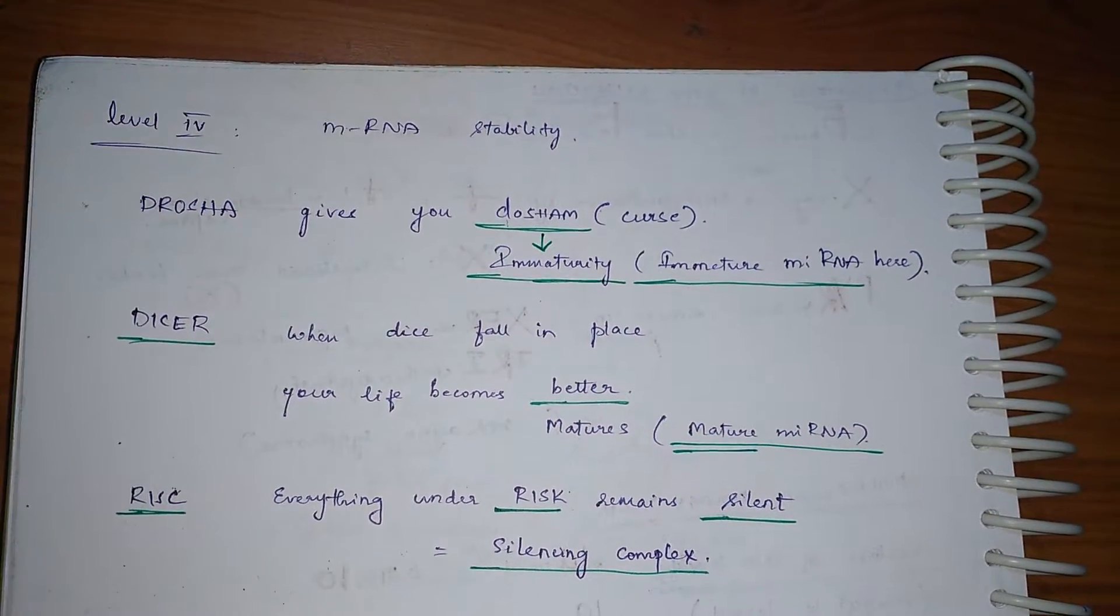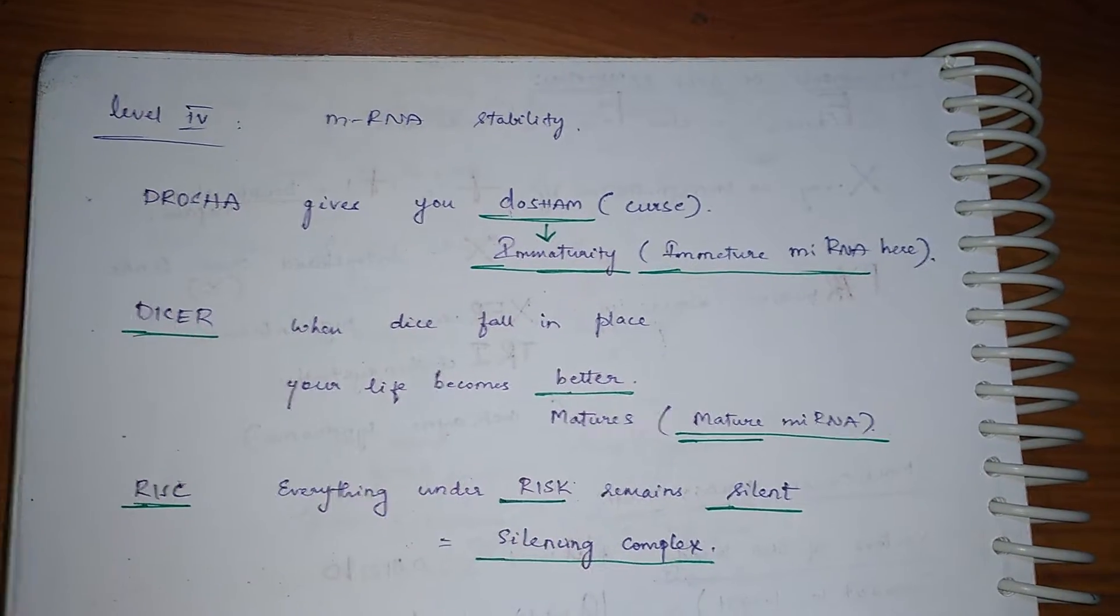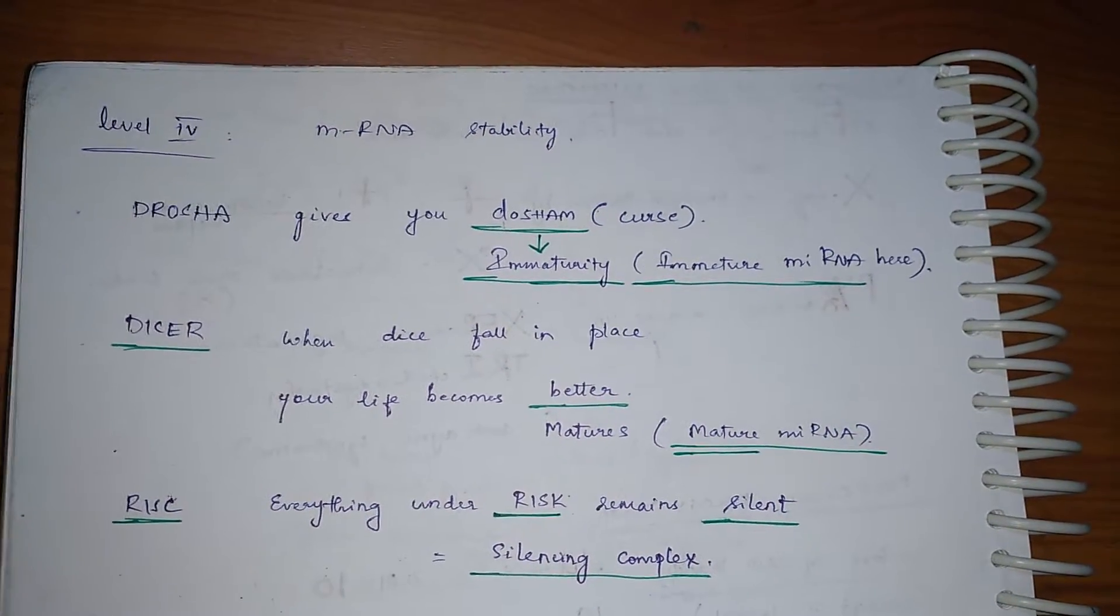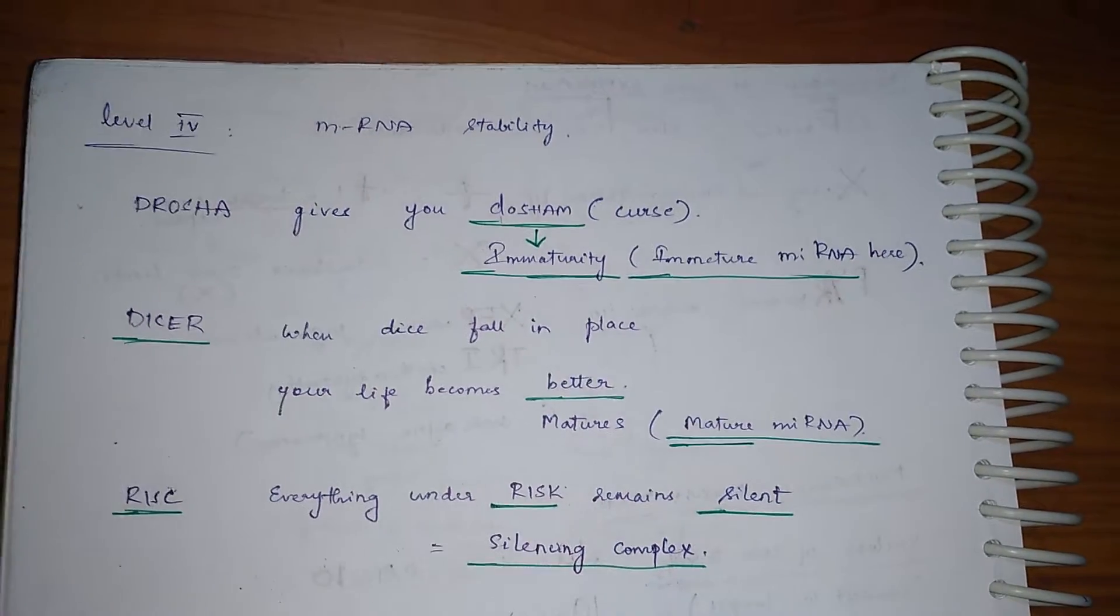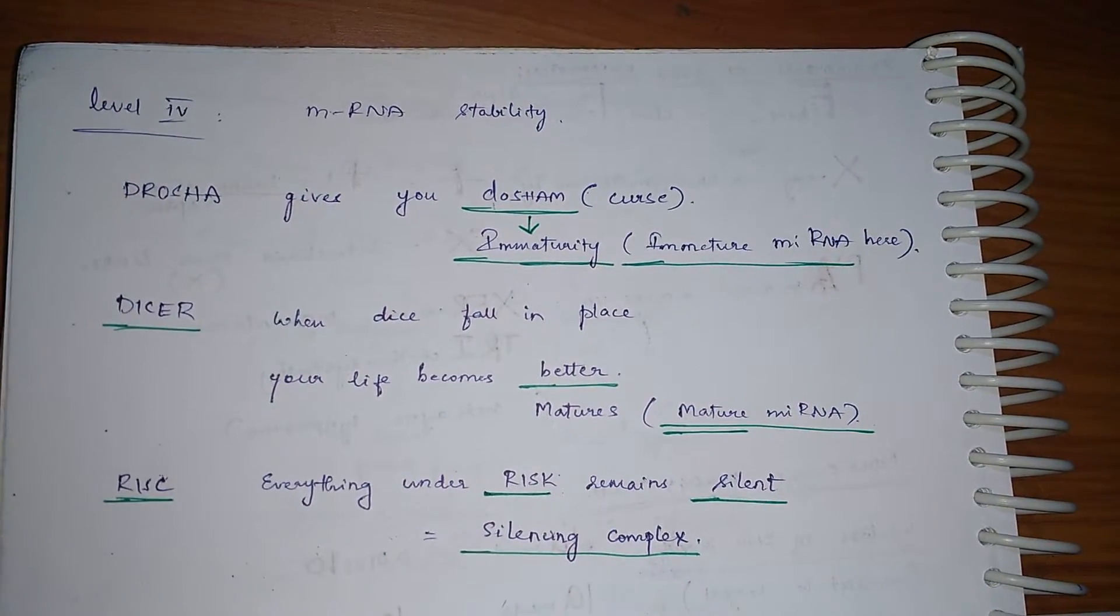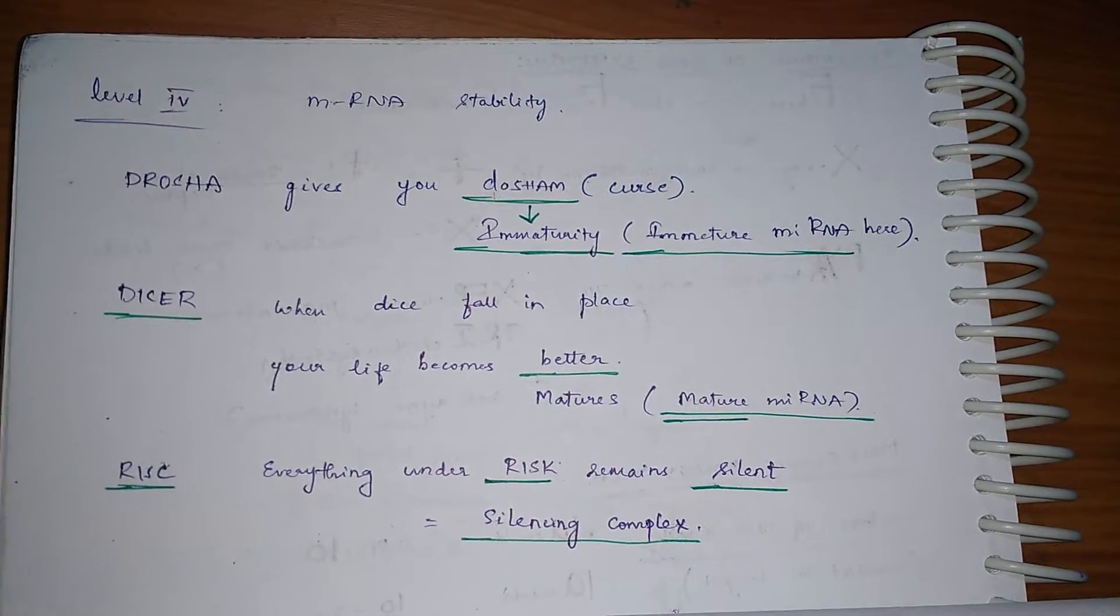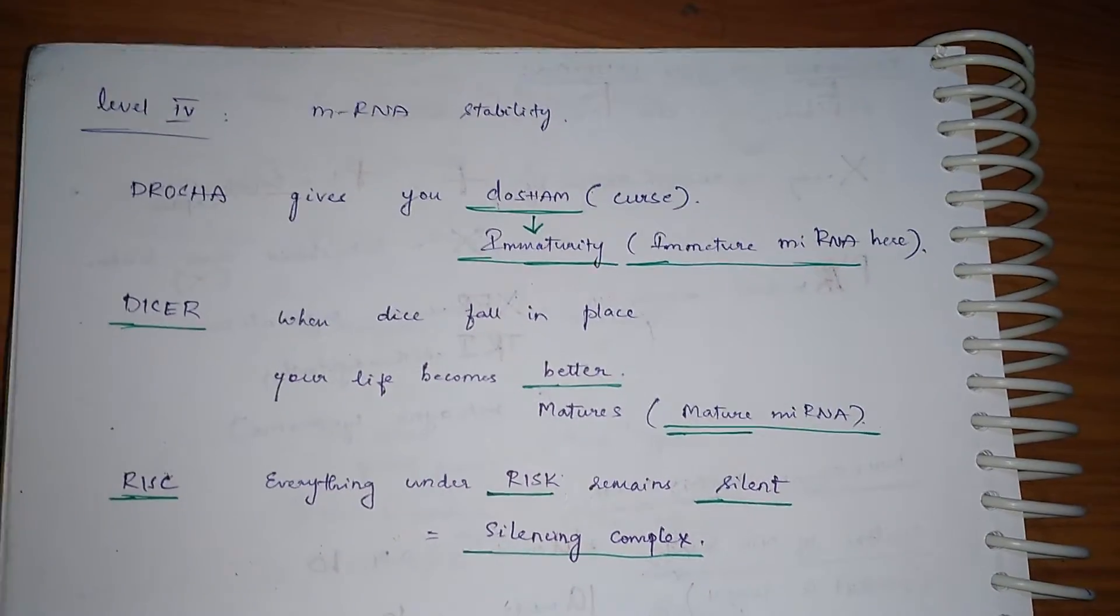So it's a word jumbling mnemonic. We have Drosha, Dicer, and RISC - these are the molecular level basis. So how to remember what controls the mRNA at which stage?